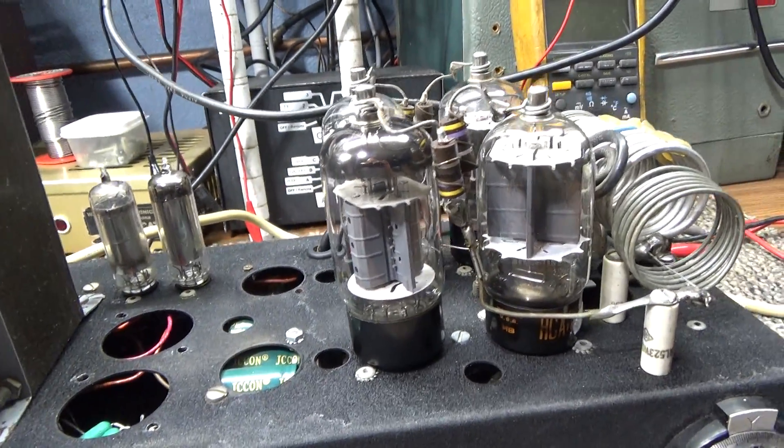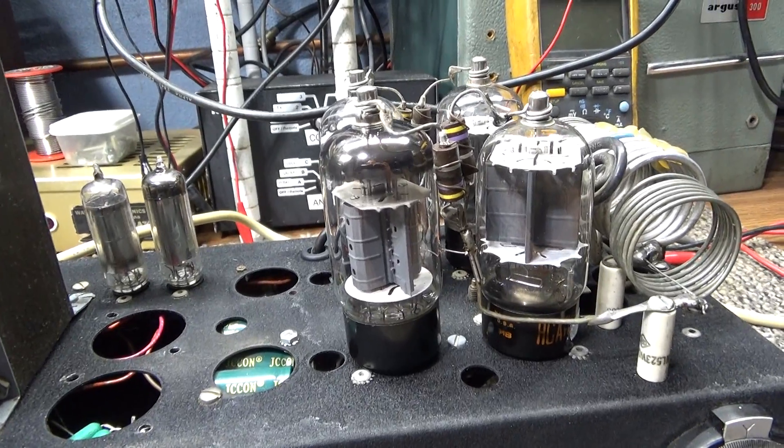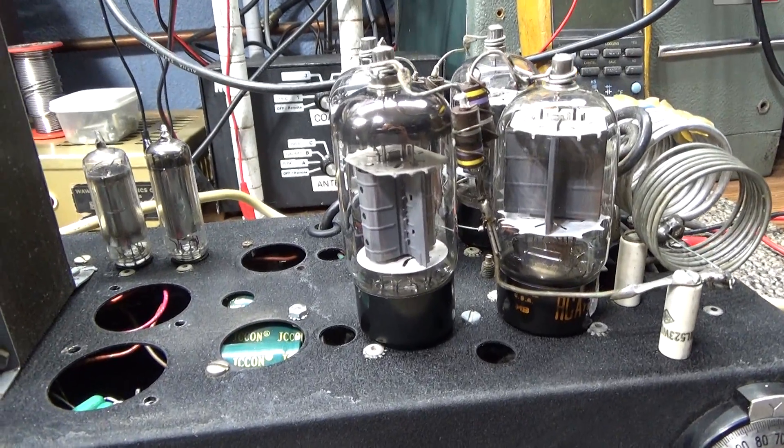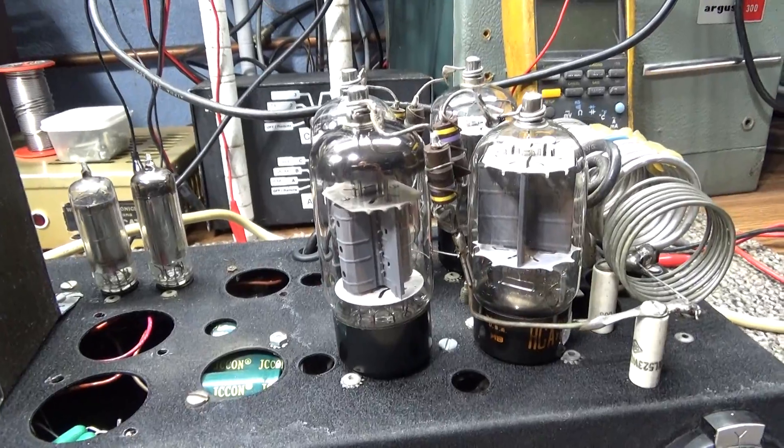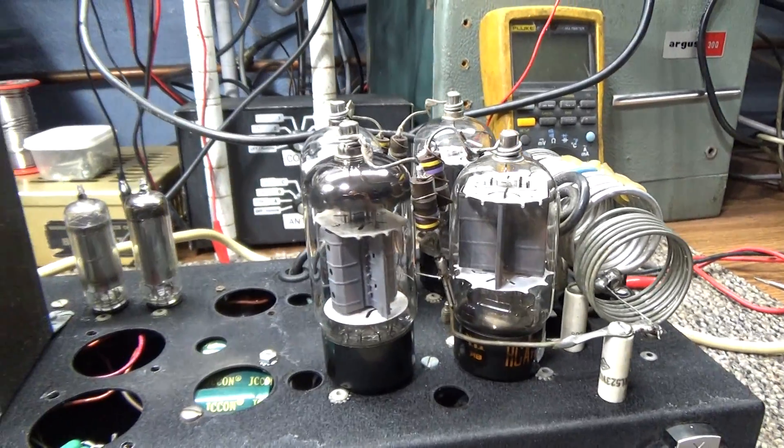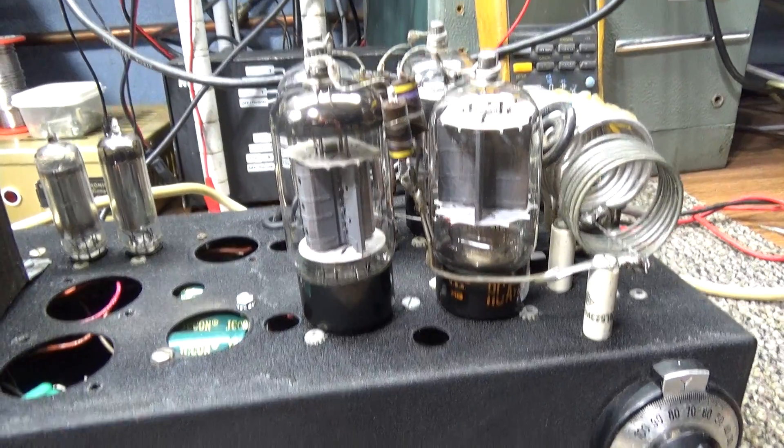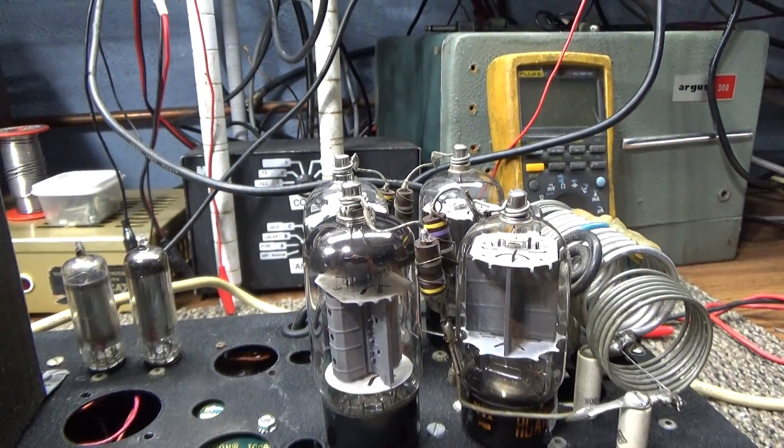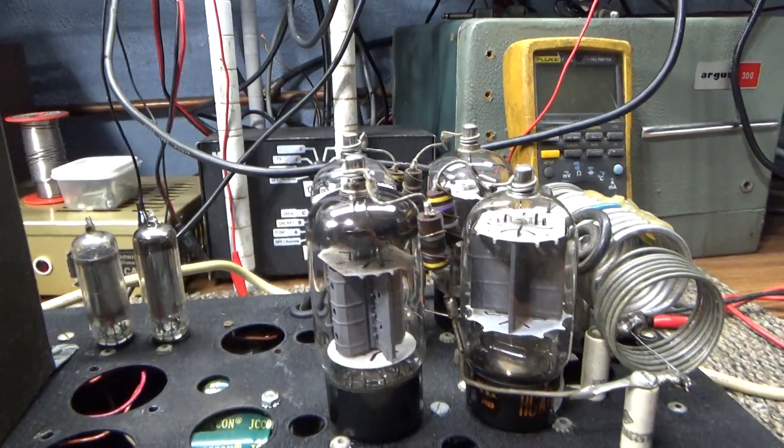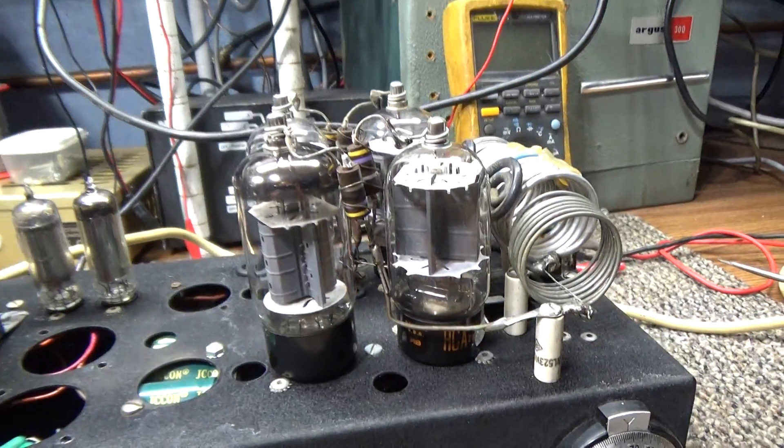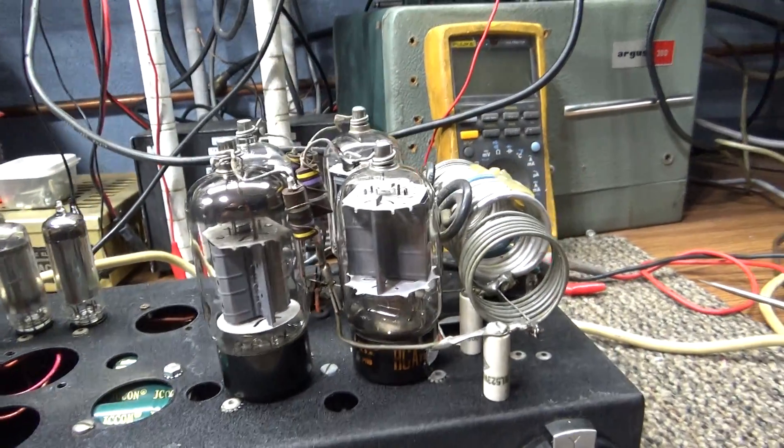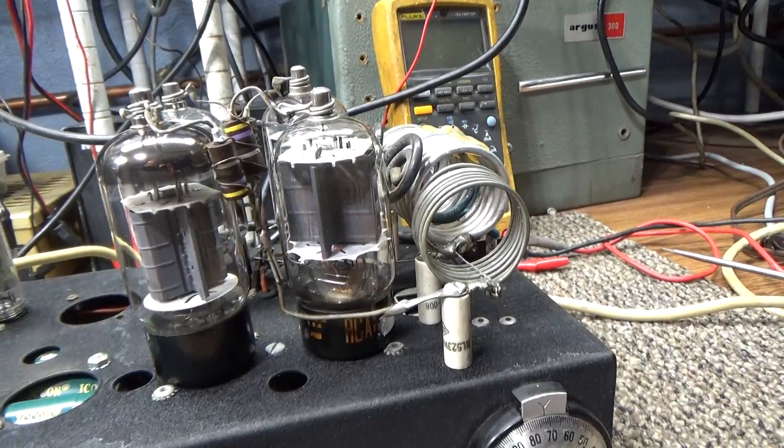When I fired it up again, the bias, the negative bias, was reading zero and I'm like what's wrong with this thing. I found out that it was one of the tubes again that was shorted and that's why the bias was reading zero. So I got another tube and stuck it in there.